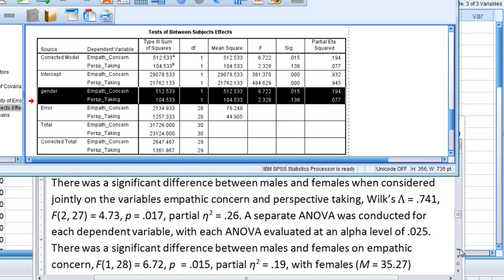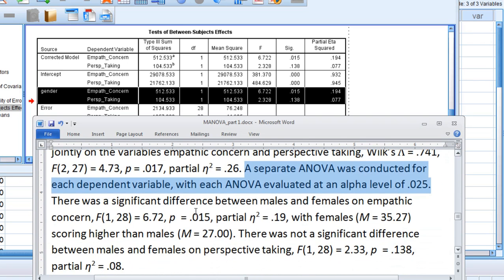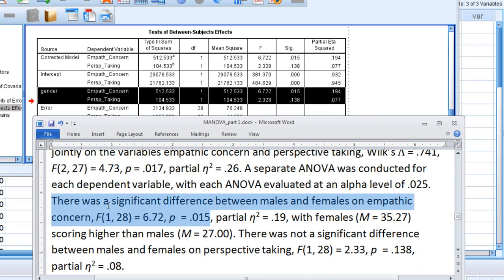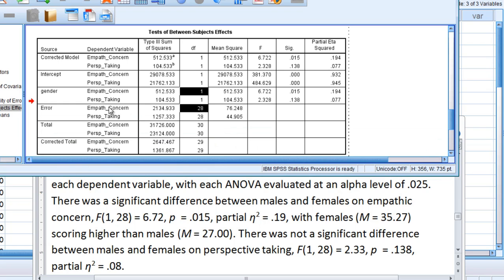So our first ANOVA - I talk about the significant result first. I say there was a significant difference between males and females on empathic concern. And then I have F of 1 and 28. That's right here - 1 and then 28 for error.